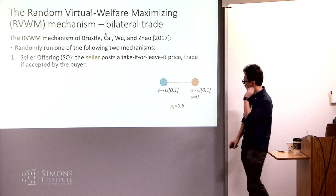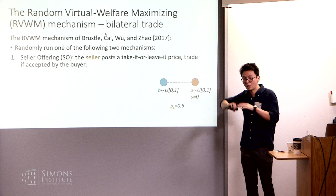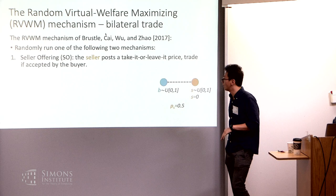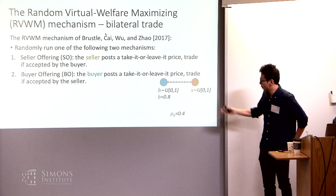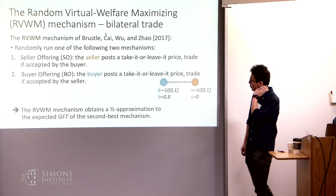You just randomly run one of two following mechanisms. The first I call seller offering: the seller posts a take-it-or-leave-it price and trade happens whenever a buyer accepts that price. The seller looks at her cost and the buyer's value distribution, and figures out a price that maximizes her expected utility. You can do buyer offering, which is just the symmetric version. Randomly picking one of the two gives you a factor-two approximation in the bilateral trade case.